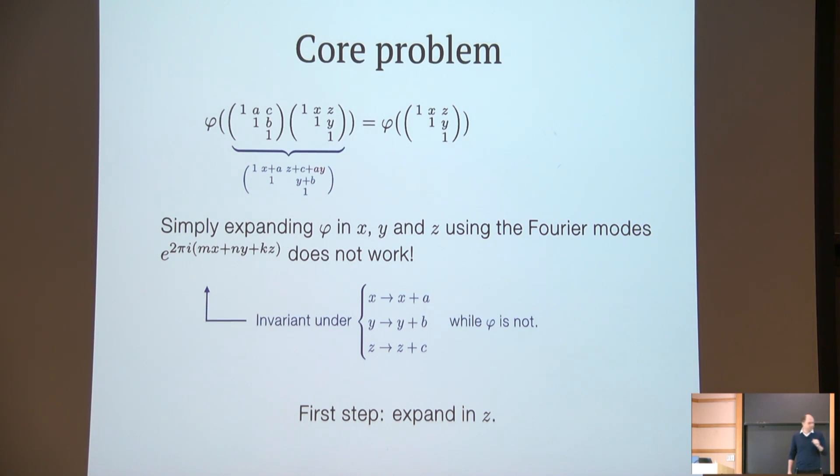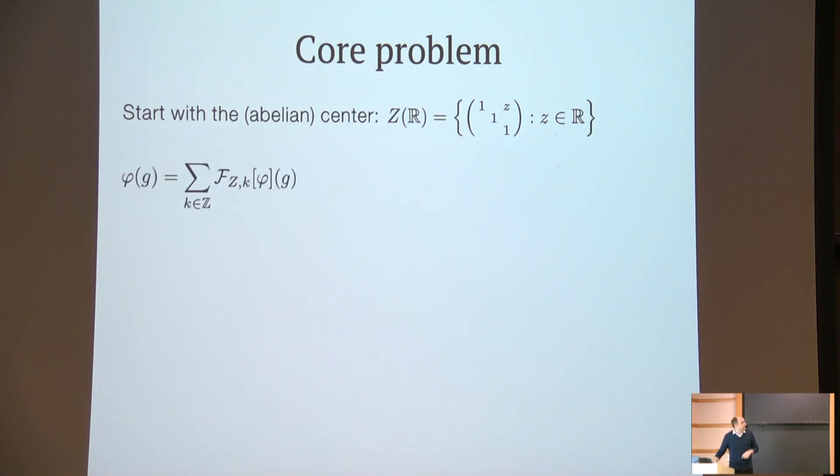So what we do is start by first expanding in only z, so we start with the center. Phi can be written as this Fourier series here, where we sum over modes k, over Fourier coefficients F_k, which are this period integral here where we can take the integral to be from 0 to 1 in z' with the Fourier mode. But we note if we look at the constant term, the k equals 0 mode, that this can be expanded further.